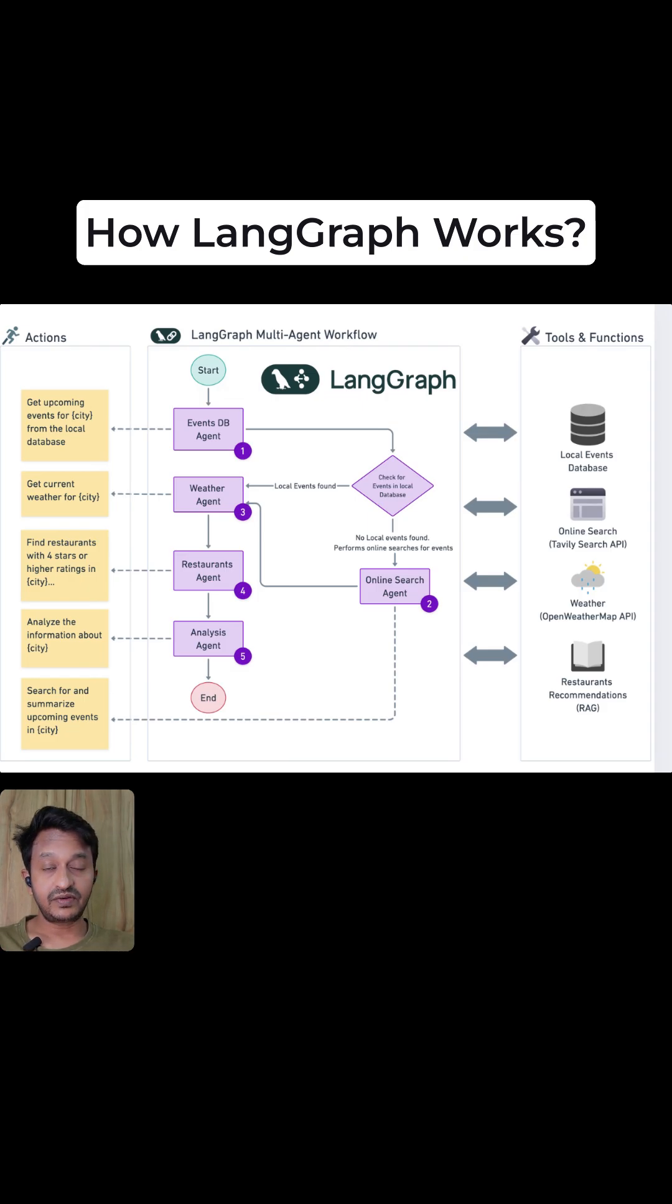LangGraph is also perfect for production agent systems. You can use it for production systems. And it's exactly what you need when you want to build powerful multi-agent workflows. And that's why LangGraph is one of the robust libraries that most of the AI engineers and companies are using today.